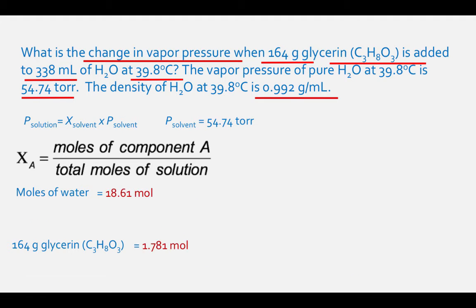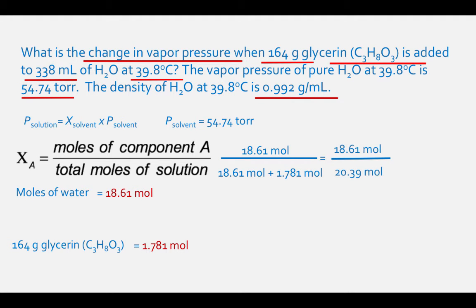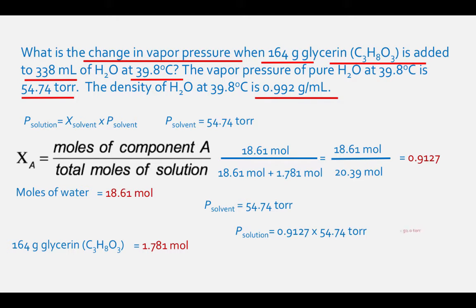Now to calculate the mole fraction of the solvent: take the moles of water, 18.61 moles, and divide by the sum of the moles of solvent and solute — 18.61 plus 1.781 moles, which equals 20.39 moles. The mole fraction comes out to 0.9127. Multiplying the mole fraction by the vapor pressure of the pure solvent: 0.9127 times 54.74 torr equals 50.0 torr to three significant figures. So the vapor pressure is lowered by 4.74 torr.